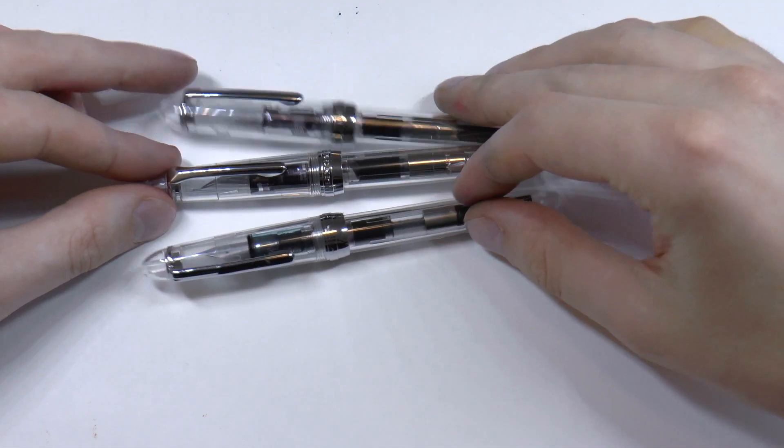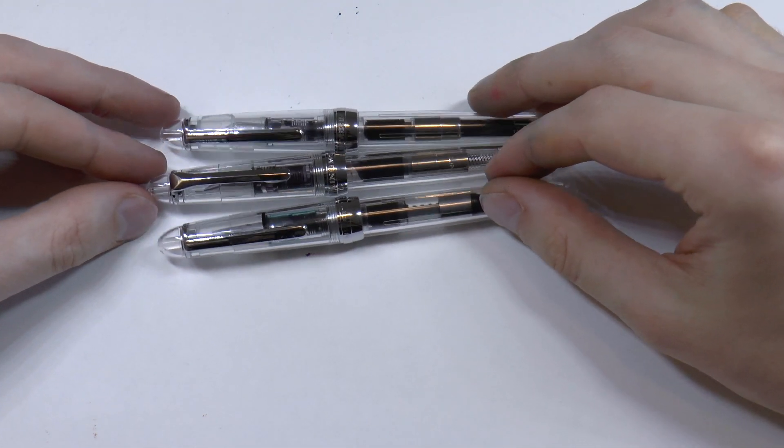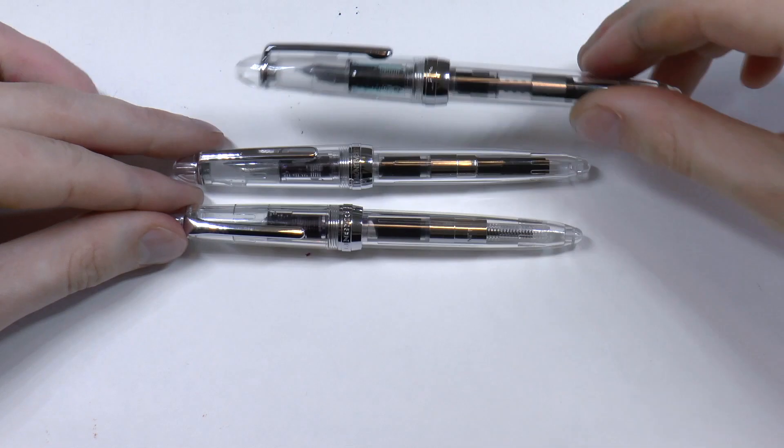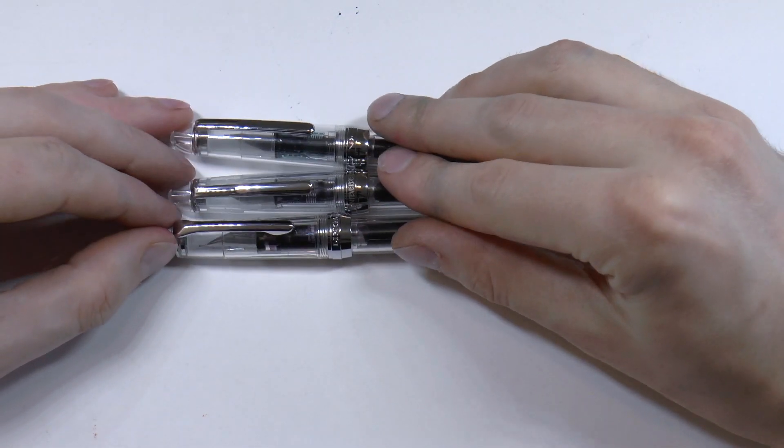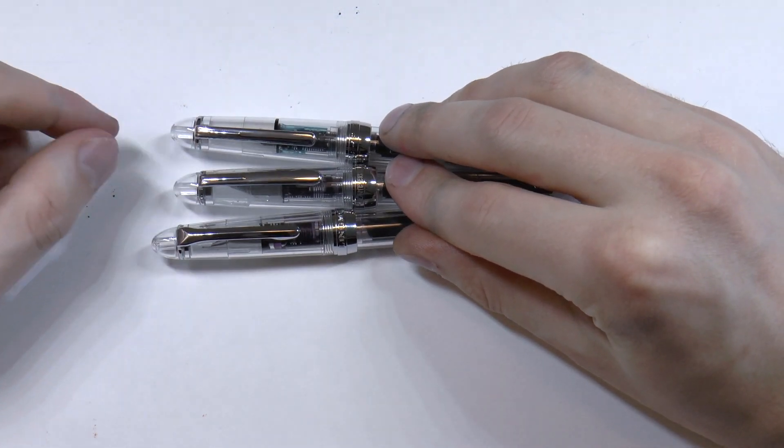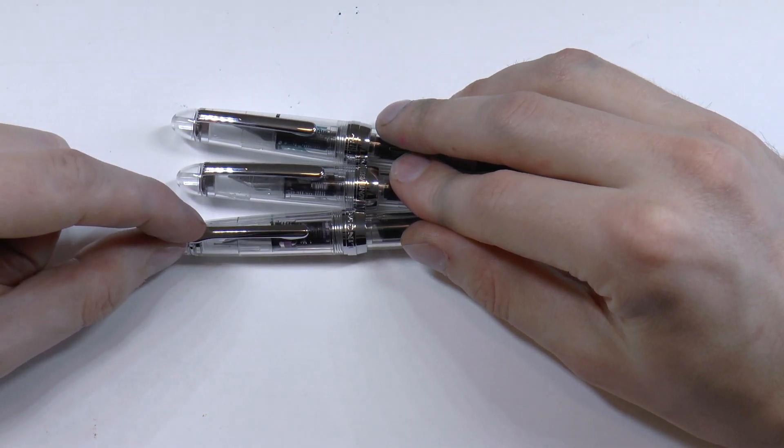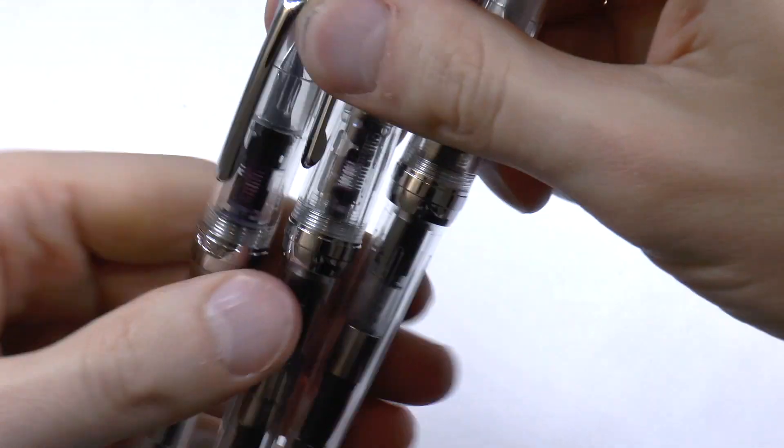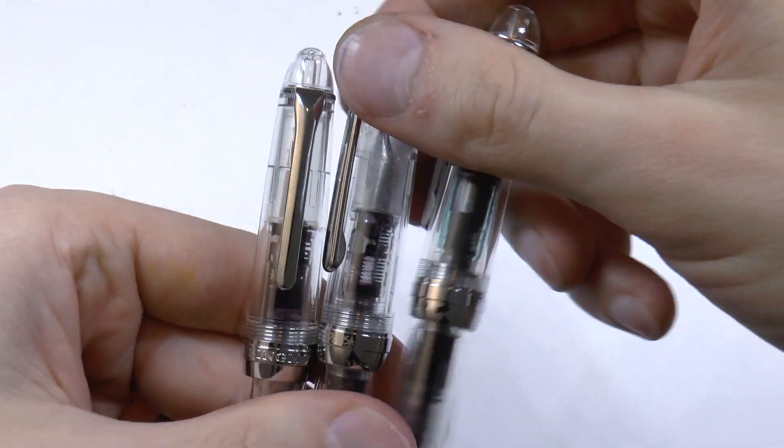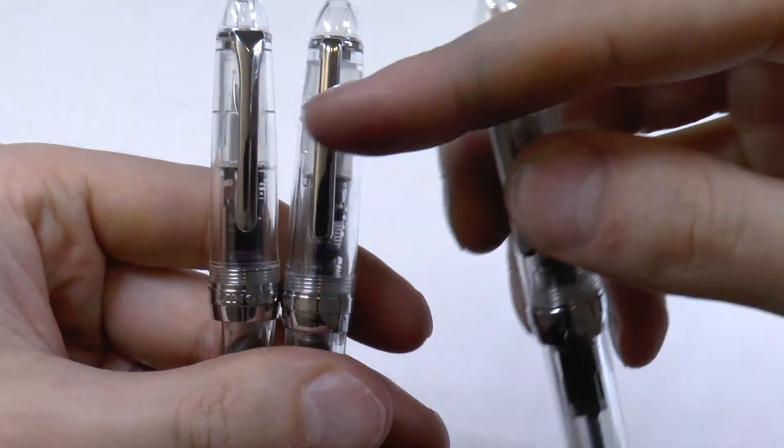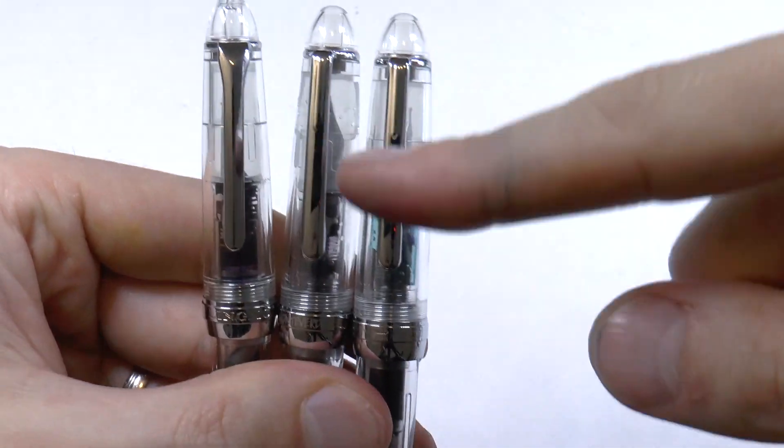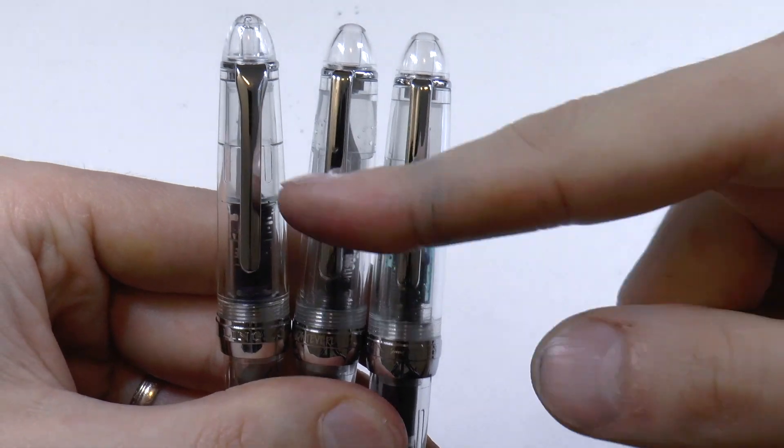Clearly three very similar pens, yet there are certain differences. I'll try to show you some of these. One of the most interesting is that the Lingmo has a completely different clip from the other two. Let me show you this up close. So here we have the Lingmo Lorelei, the Monteverde Monza, and the Jinhao 992. These have identical clips.